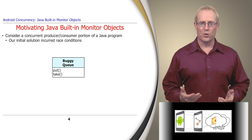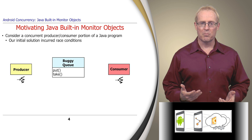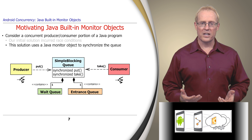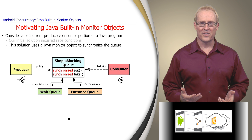The program contained two threads, a producer and a consumer, that incurred race conditions when calling the put and take methods of buggy queue. To fix the problems with the buggy queue, we'll use a Java built-in monitor object that enables the threads to communicate by passing messages via a properly synchronized simple blocking queue.